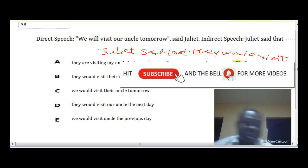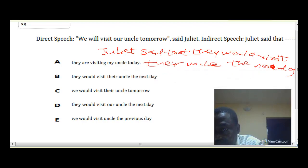So if you read it now, you hear something like Juliet said that they would visit their uncle the next day. Okay, so let's look at the options. They are visiting my uncle today. B, Juliet said they would visit their uncle the next day.